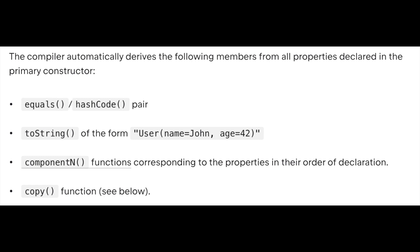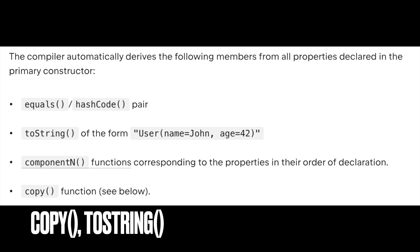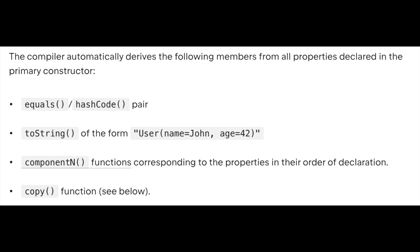The built-in functions include copy and toString. You can construct specific properties and copy the current object with modified values. When you need to create a normal class you have to write these manually, but in a data class, all these are automatically provided.